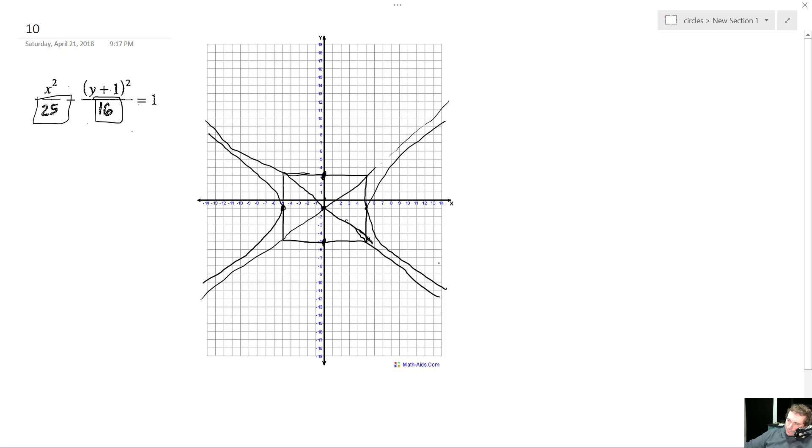Okay, and then our vertices are at negative 5, negative 1, and 5, negative 1.